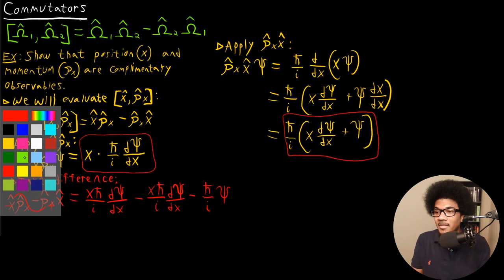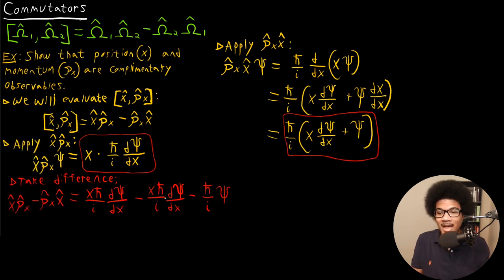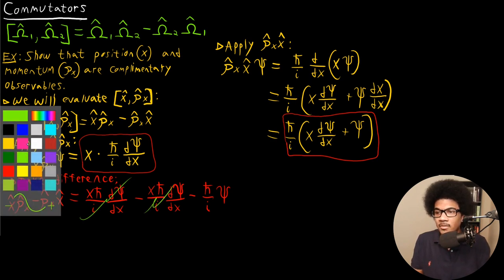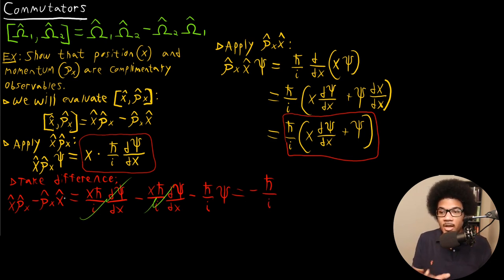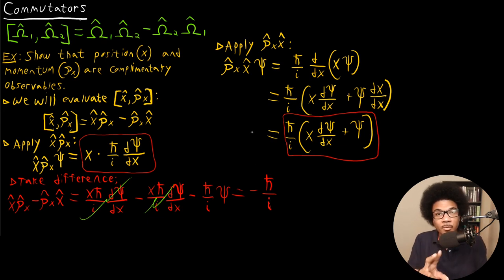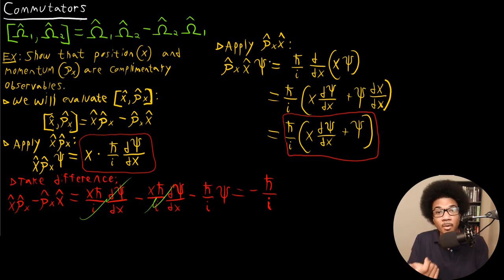We get some cancellation here — these two x·(H-bar/i)·d-psi/dx terms are exactly the same, so they cancel with one another. That gives us our final result: negative H-bar over i. Once you're done subtracting, you can drop the trial wave function. This gives you the difference between the two orderings — momentum operator first versus position operator first.